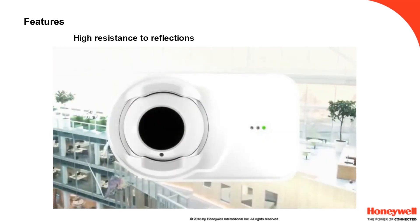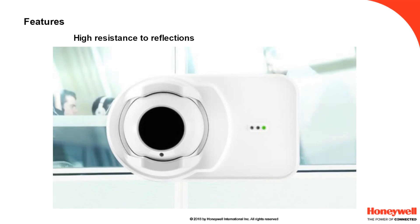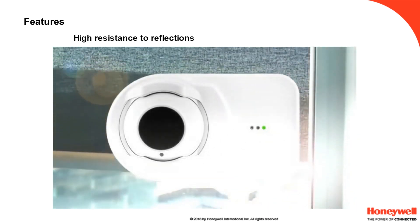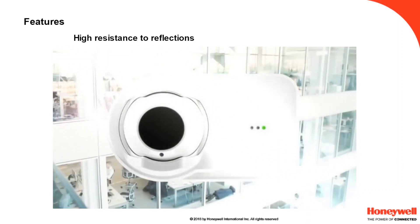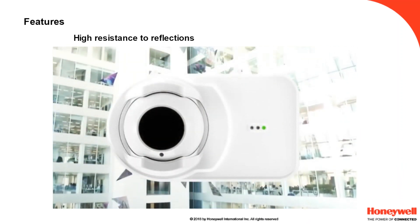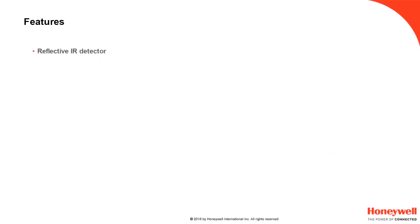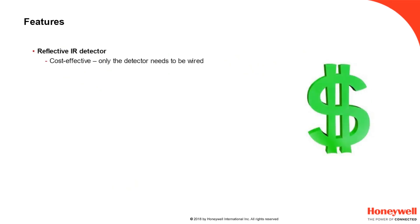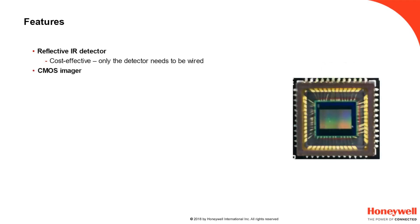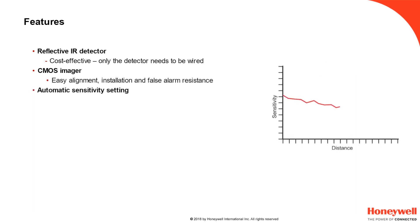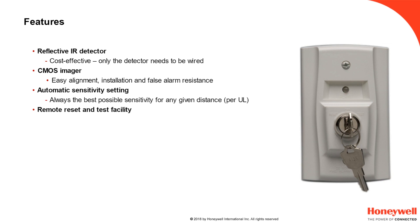This same feature means that reflections from modern building materials — glass and polished stainless steel for instance — will have no effect on the device. Features include: a reflective IR detector, cost-effective installation (only the detector needs to be wired in), a CMOS imager for easy alignment and false alarm resistance, automatic sensitivity settings providing the best possible sensitivity for any given distance per UL requirements, remote test and reset facilities, electronic smoke test, and compatibility with the RTS151 key.